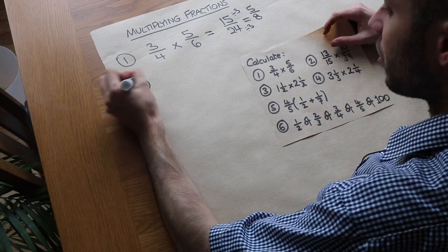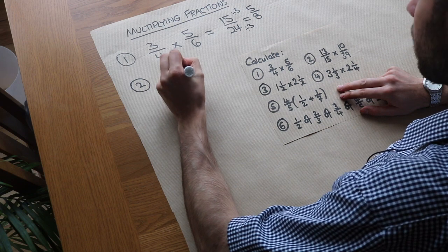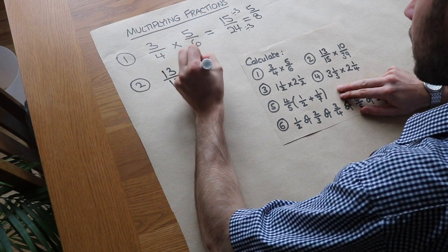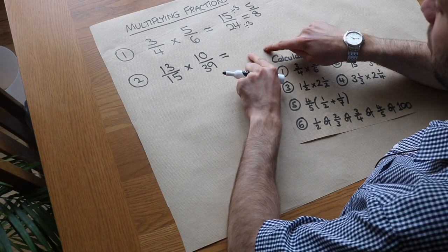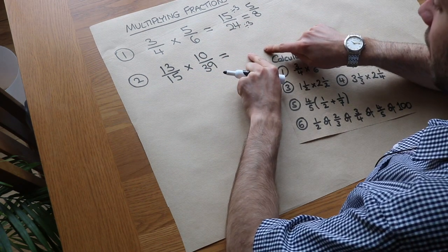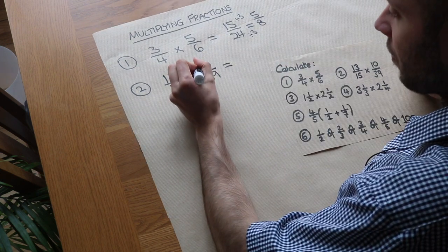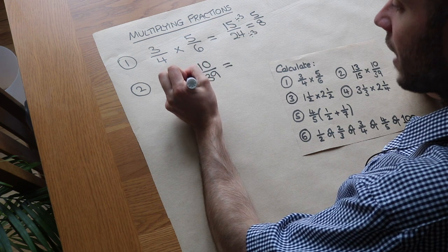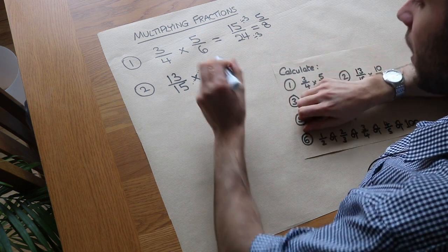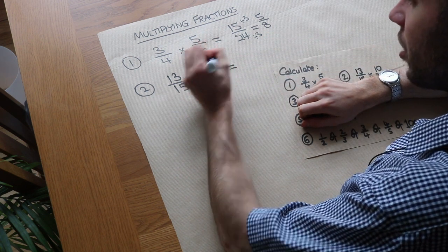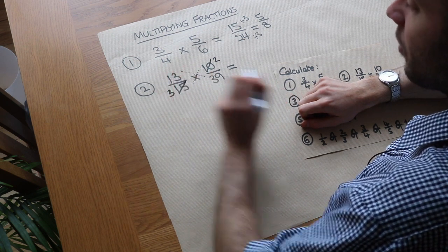Now with the second one I want to show you a principle called cross-cancelling, and that works when you're multiplying fractions together. You could just multiply the numerators and denominators and simplify after, but you can spot things top and bottom to divide by first. Sometimes these common factors occur diagonally — so diagonally, 10 and 15 both divide by 5, giving 2 and 3.